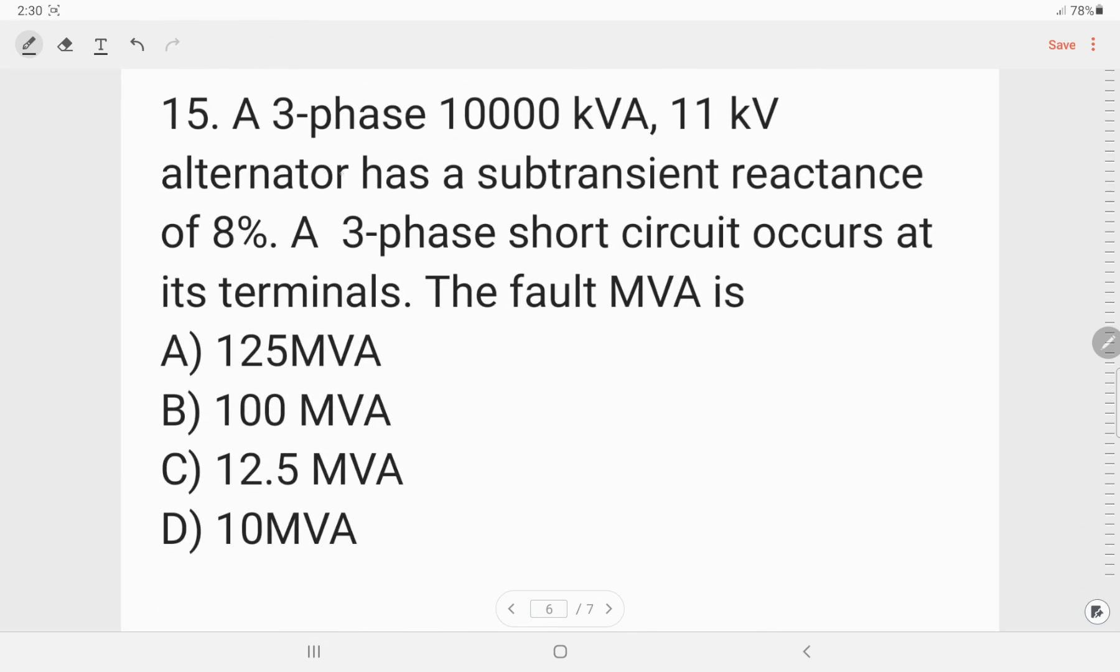Next, a 3 phase 10,000 kVA 11 kV alternator has a sub transient reactance of 8 percent. A 3 phase short circuit occurs at the terminals. The fault MVA is, so it is very easy question. The fault MVA will be, this fault MVA is 125 into 10 to the power 6. So this is all for this video.